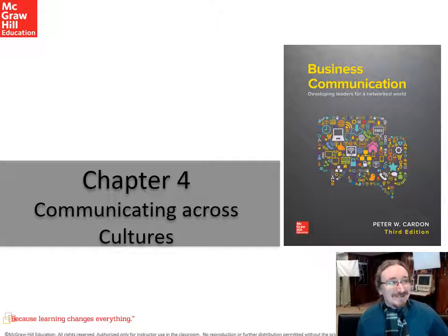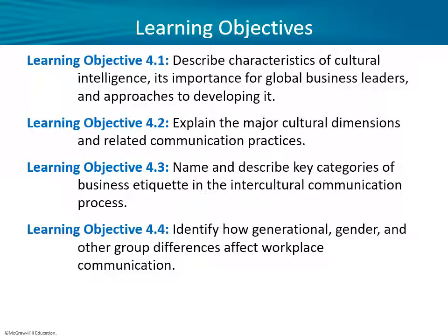We've got a lot to cover here, so without further ado, let's get into this. Here are the learning objectives for today. Notice we've only got four this time — that's a good thing. We've been talking about cultural intelligence, or CQ now, instead of the emotional quotient we talked about last time. So we'll be expanding that concept into cultural aspects of it. Now we're talking about the cultural dimensions and axes you can use to compare cultures, and the key categories of business etiquette in the intercultural communication process.